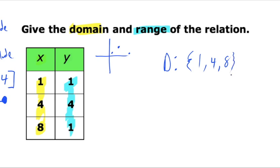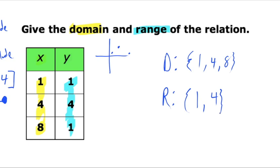For the range of a discrete graph, we use set notation as well since we're talking about individual points. The y values are 1, 4, and 1 again — but since we already have 1 in the set, we don't rewrite it. So the range is {1, 4}. When talking about discrete graphs, we list all the x's for the domain and all the y's for the range, leaving out any repeats.